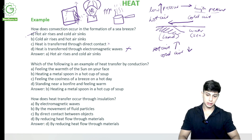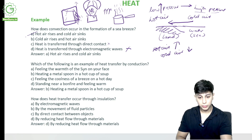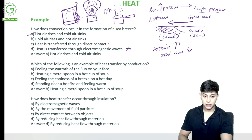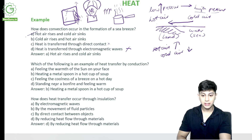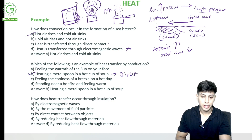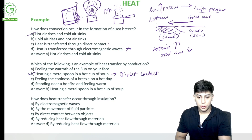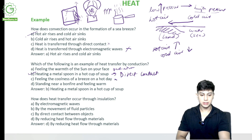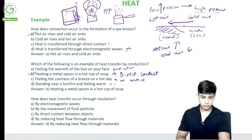Which of the following is an example of heat transfer by conduction? Options: feeling the warmth of the sun on your face; heating a metal spoon in a hot cup of soup; feeling the coolness of a breeze on a hot day; standing near a bonfire and feeling warm. The answer is B — heating a metal spoon in a hot cup of soup — because it involves direct contact. Feeling warmth from the sun and standing near a bonfire are radiation; coolness of a breeze involves no contact.